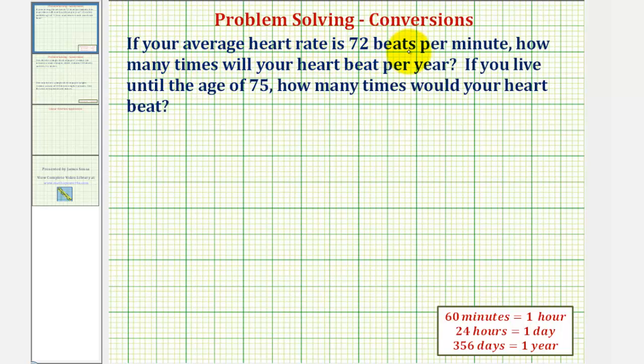If your average heart rate is 72 beats per minute, how many times will your heart beat per year? And also, if you live until the age of 75, how many times would your heart beat?